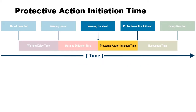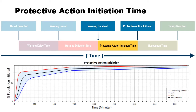Once the warning is issued by the emergency management agency, how quickly does it spread throughout the population? We represent this function in LifeSIM as a tabular function with uncertainty — the percentage of population that gets warned over time. It's a curve function representing your population and what percentage of them get warned over time. Once they receive that warning, how long does it take them to take protective action? That's represented by the PAI curve — the protective action initiation curve.